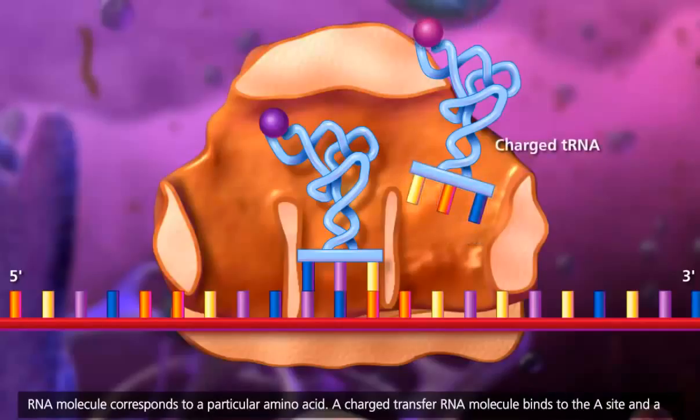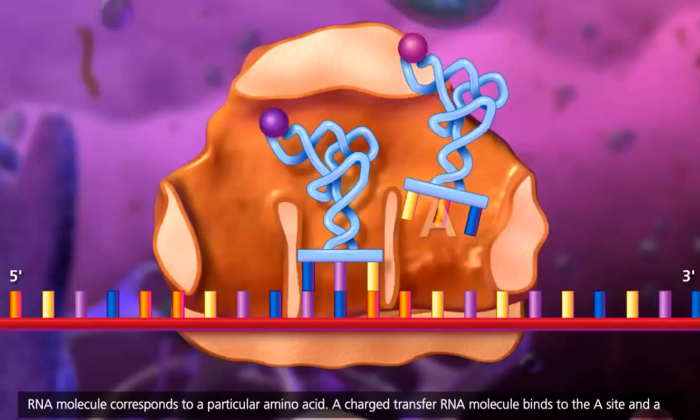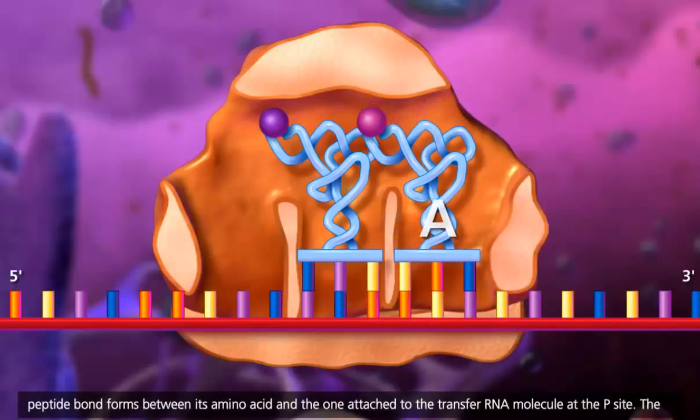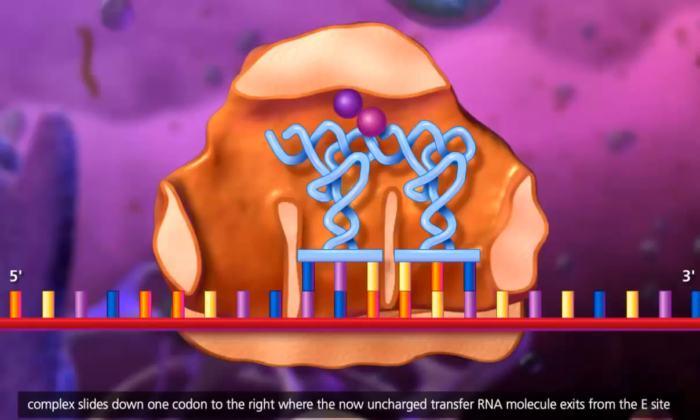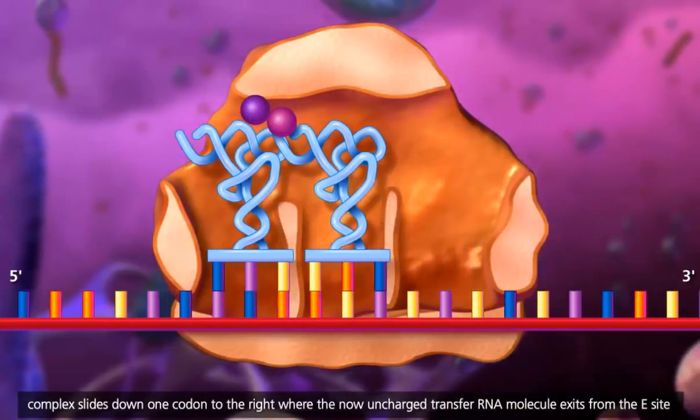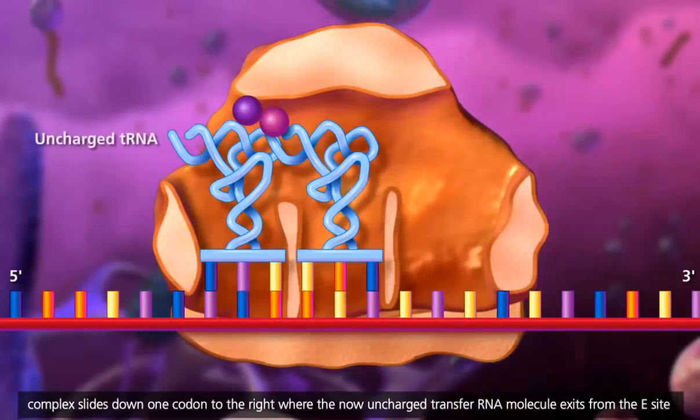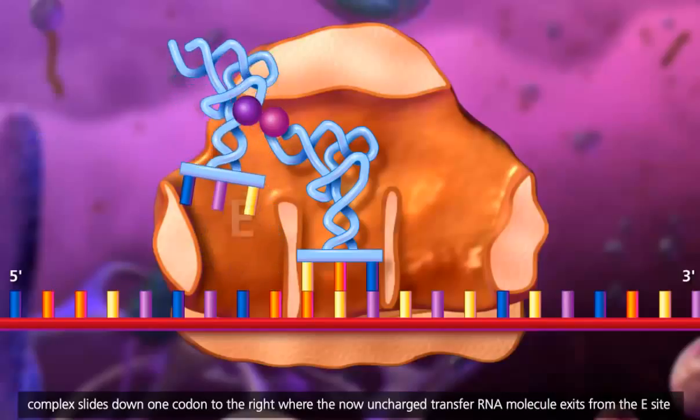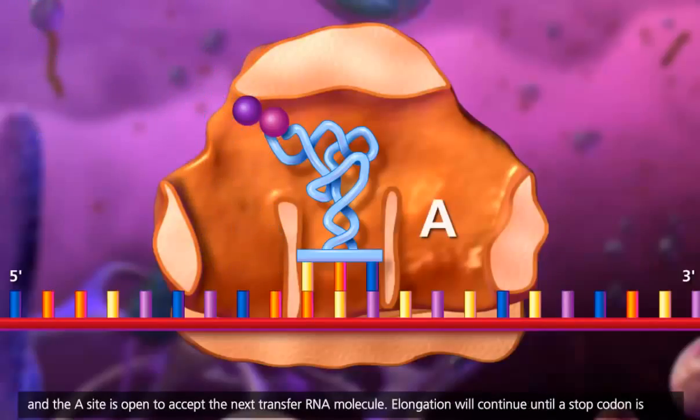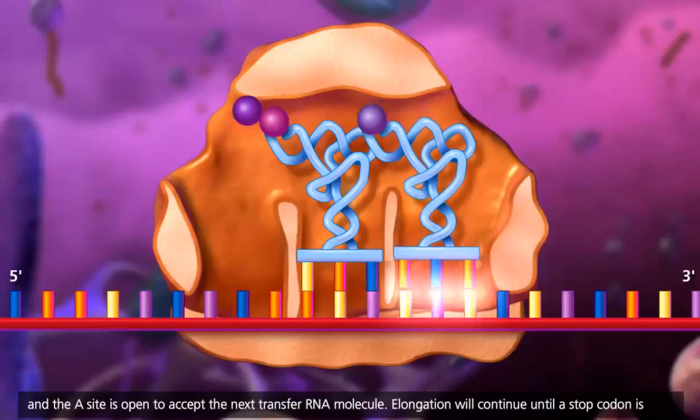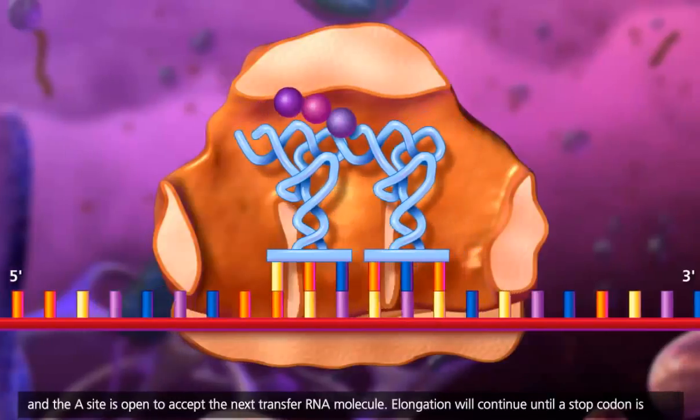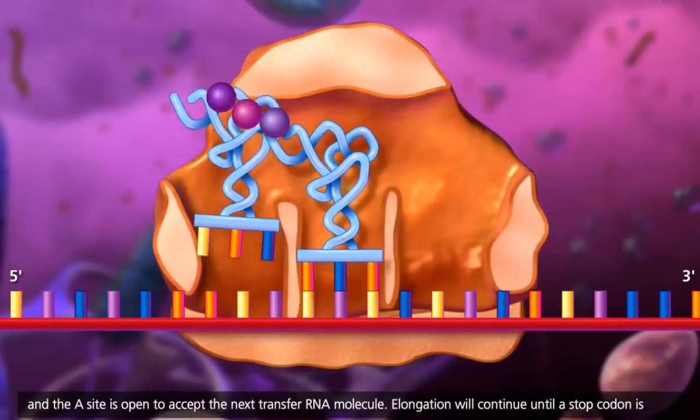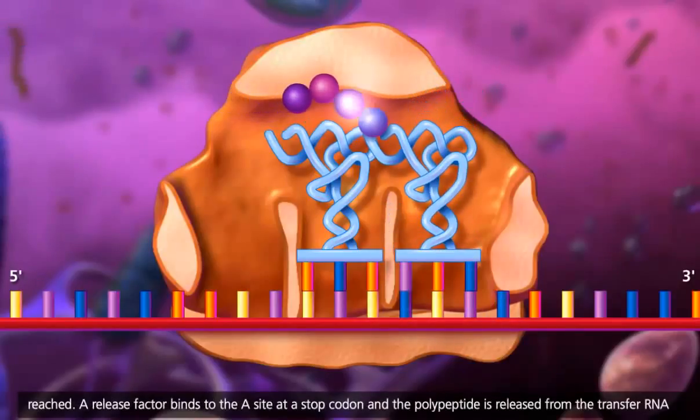A charged transfer RNA molecule binds to the A site and a peptide bond forms between its amino acid and the one attached to the transfer RNA molecule at the P site. The complex slides down one codon to the right where the now uncharged transfer RNA molecule exits from the E site and the A site is open to accept the next transfer RNA molecule. Elongation will continue until a stop codon is reached.